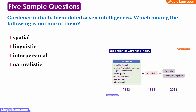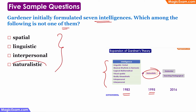Sample question: Gardner initially formulated seven intelligences — which of the following is not one of them? As we learned earlier, in 1983 Gardner came up with seven different types of intelligences, and later in 1995 he added naturalistic intelligence to the list. Therefore, if you look at the options, naturalistic intelligence is not part of the original seven — it was added later in 1995. Therefore, this is the correct answer.